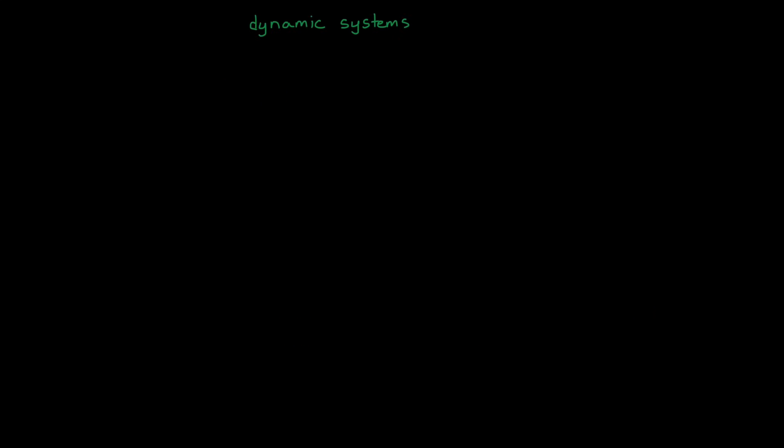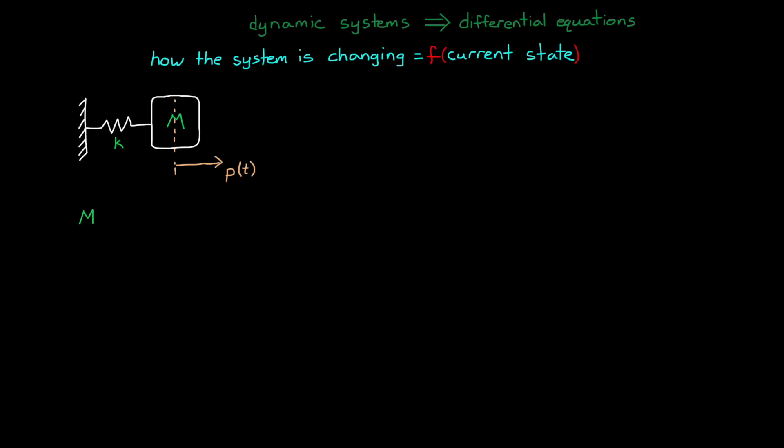An interesting thing about dynamic systems is that they can be represented by ordinary differential equations. This is because they have this property that how the system is changing at any given time is a function of its current state. If we zip through the derivation for a spring mass system real quick, you can see we end up with a differential equation. The way that the system is changing, acceleration, is a function of the current state, position.